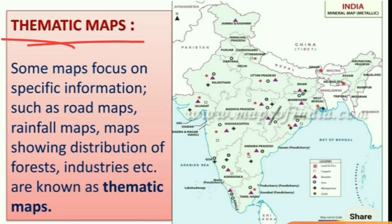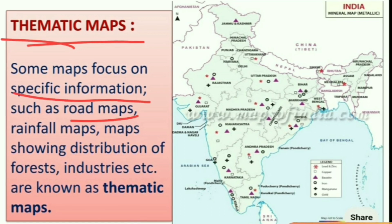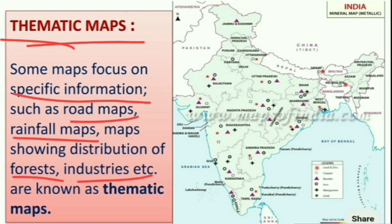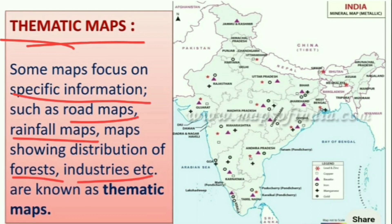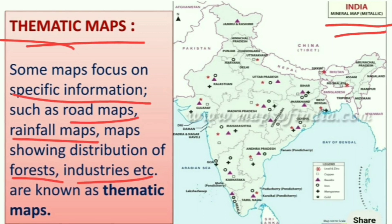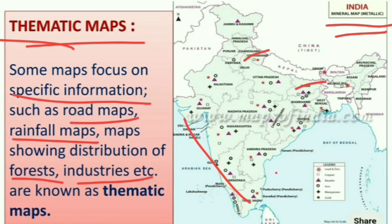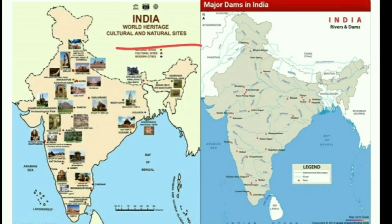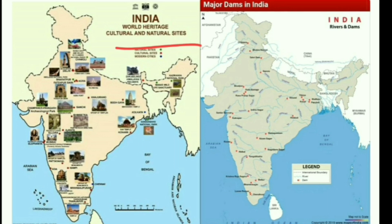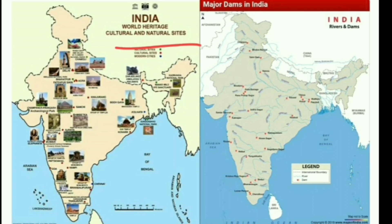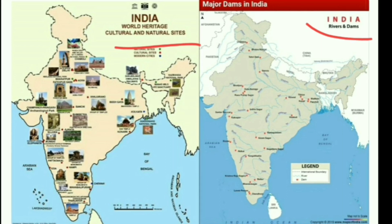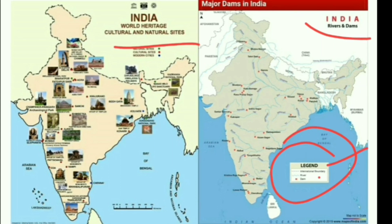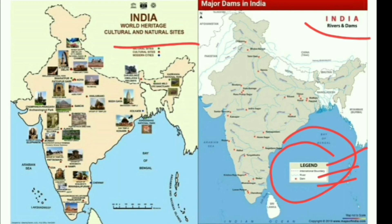The third type is thematic maps. The name 'theme' itself indicates it is providing particular information. These maps include specific information such as road maps, rainfall maps, and maps showing the distribution of forests, industries and so on. In the map shown here, the focus is totally on the minerals present in different states of India. In another slide, we can see two maps — one showing world heritage cultural and natural sites in India, and another focused on rivers and dams across India, with symbols to identify international boundaries, rivers and dams.